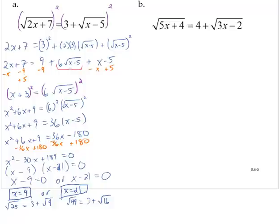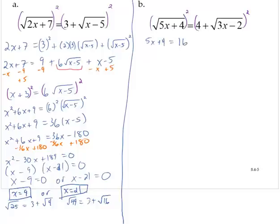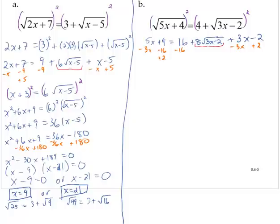Exercise B — let's follow a similar process. First, I'll square both sides of the equation, giving 5x plus 4 equals 16 plus 8 times the square root of 3x minus 2 plus 3x minus 2. To isolate the radical term, I'll subtract 3x, subtract 16, and add 2 to both sides, yielding 2x minus 10 equals 8 times the square root of 3x minus 2.